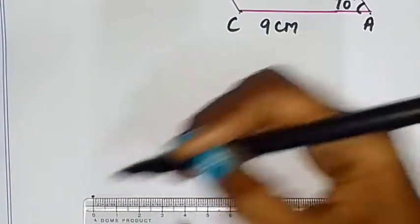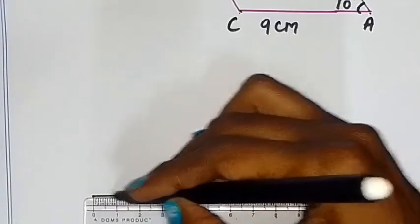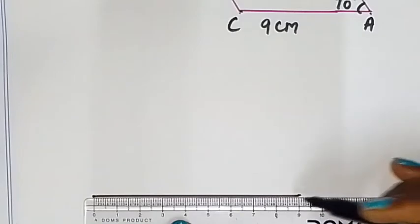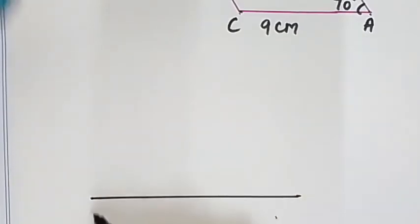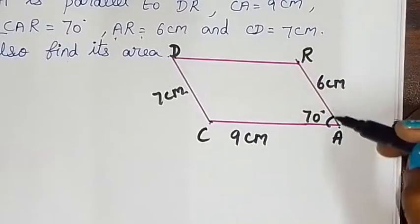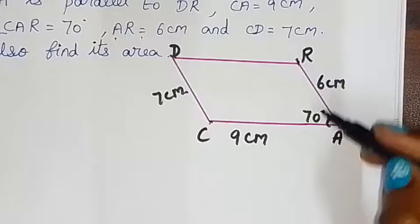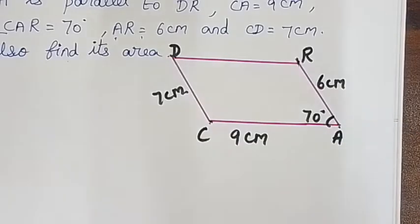1 dot and 9 cm, join is 9 cm. CA 9 cm. We have a side length, protractor 70 degree make A.